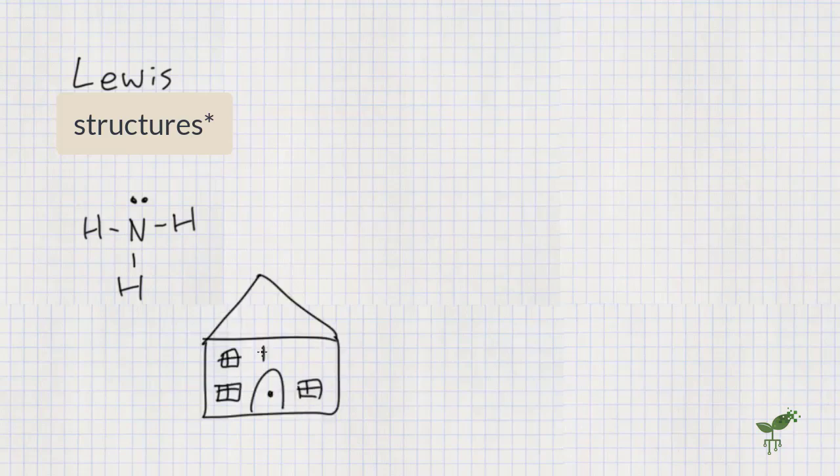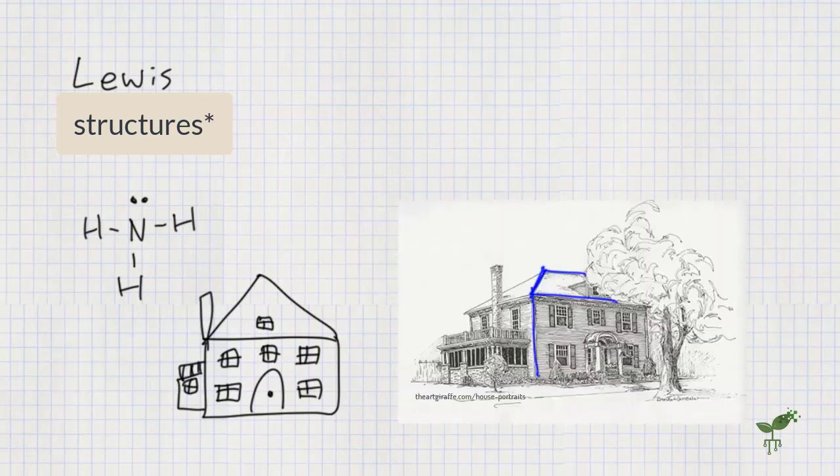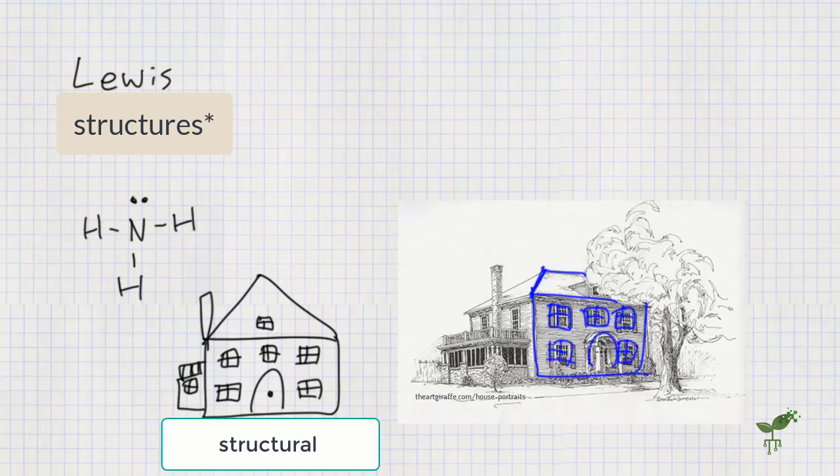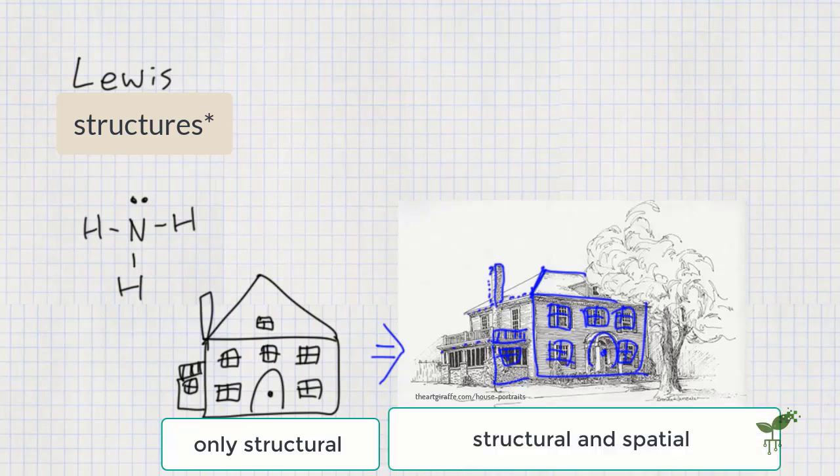Think of it like what sort of information you'd know from this drawing compared to this drawing. Well, from the simple one, you know structural information, what's connected to what, such as that the windows are in the walls and that the roof's on top. However, you don't know how far back the house goes or how big the balcony is to the side of the house. So this model gives information about the structural and spatial components of the house, or molecule.